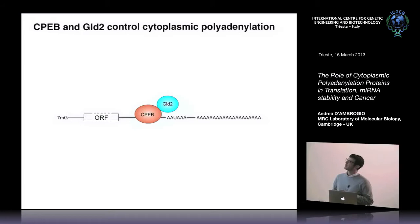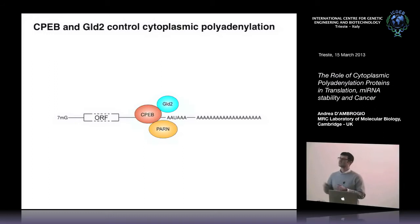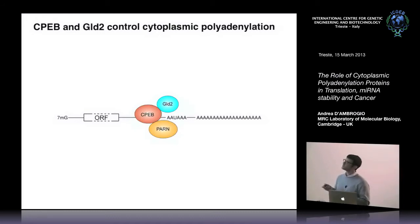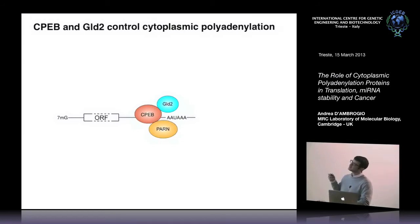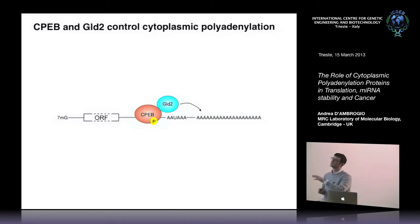GOLD2 basically elongates the polyadenosine tail at the end of 3' UTRs. There's another factor that gets recruited called PARN, or poly-A ribonuclease, which trims the tail and chops it to only a few nucleotides. The activity of these two proteins oppose one another, but PARN usually prevails, so the poly-A tail gets shortened. Upon different types of stimuli — either extracellular or intracellular — a signaling cascade gets activated, converging in the phosphorylation of CPEB1 and the expulsion of PARN from the complex, so the activity of GOLD2 can prevail.